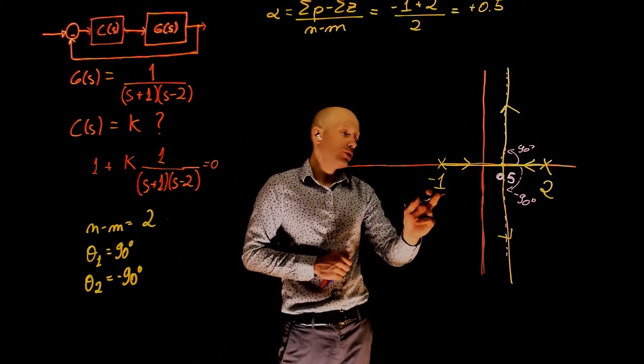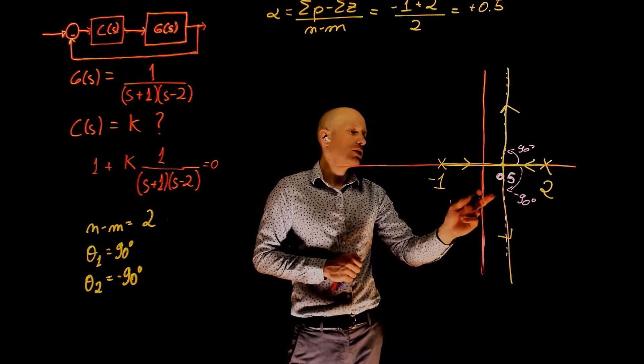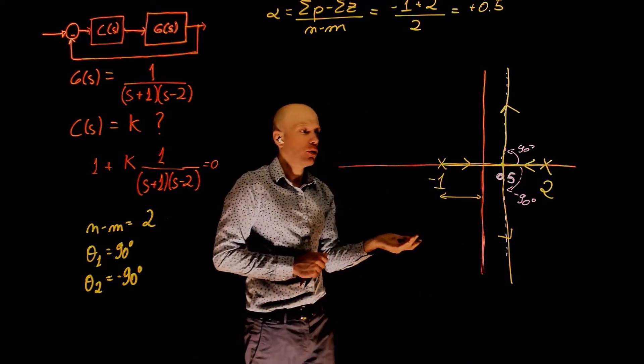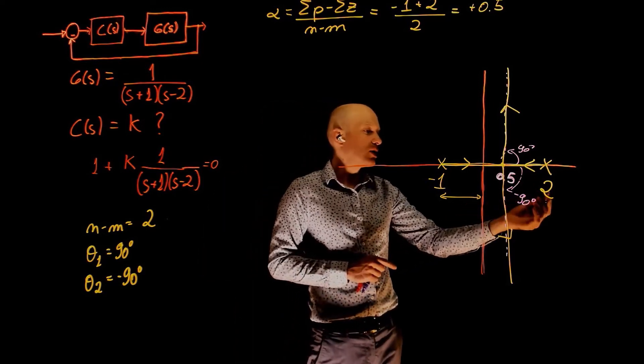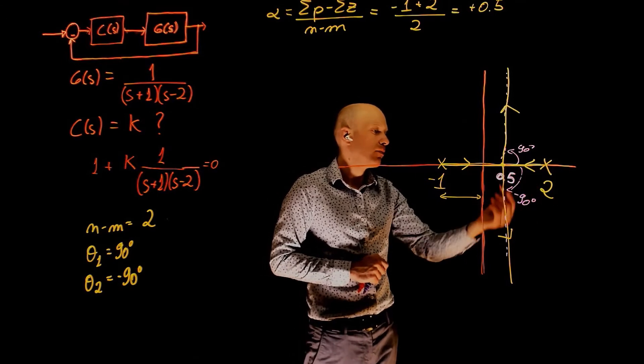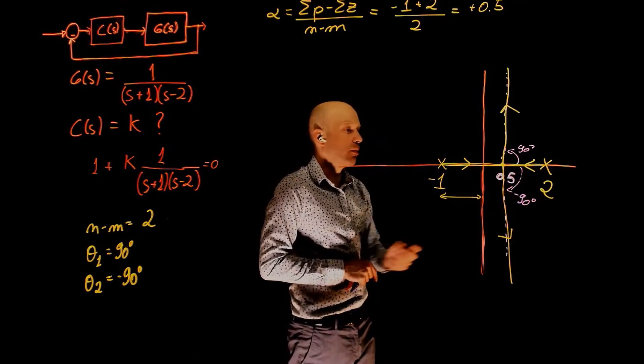This pole used to be stable. It goes into the unstable region. There is a region here where that pole is stable. But the pole at a positive 2, you notice that it will never cross into the stable part.